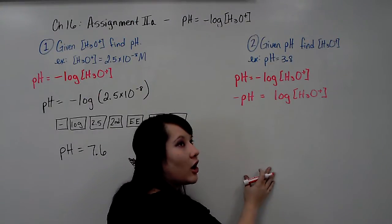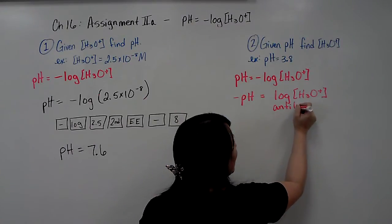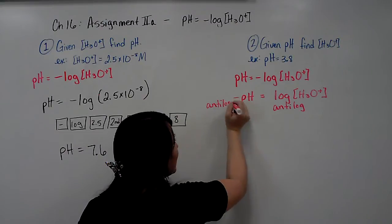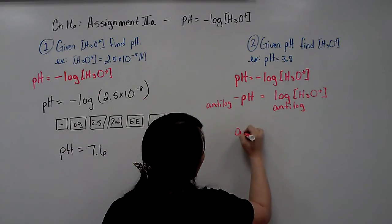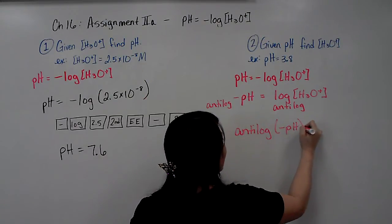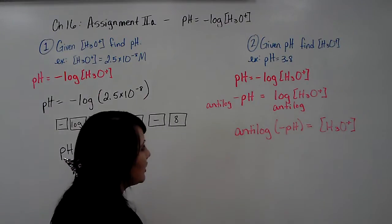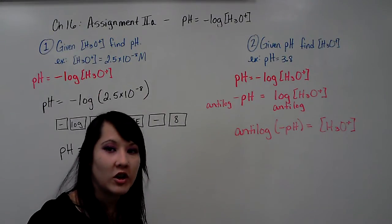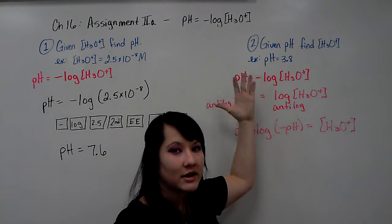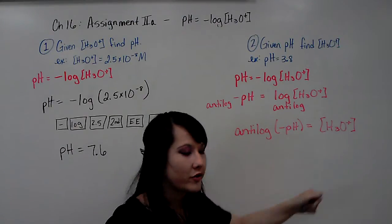And then the opposite of log is anti-log. And it's going to give me my new equation of anti-log of negative pH is going to equal the hydronium ion concentration. So I took my original equation and I just rearranged it to solve for hydronium since I have the pH. So that's going to be the anti-log of the negative pH is going to equal hydronium.